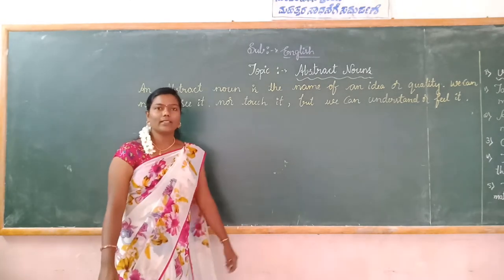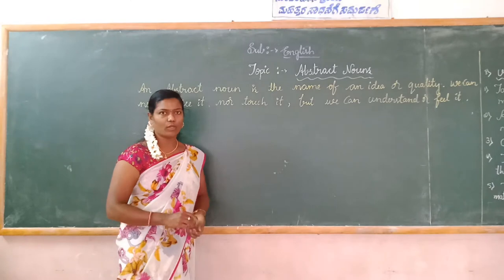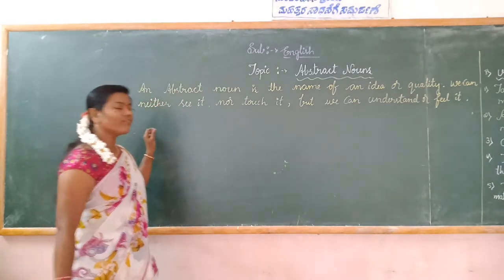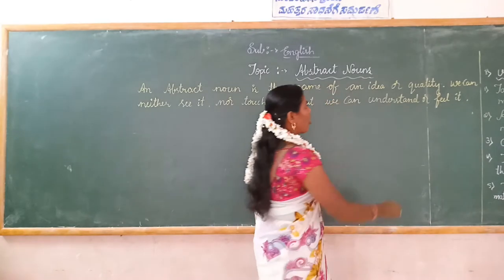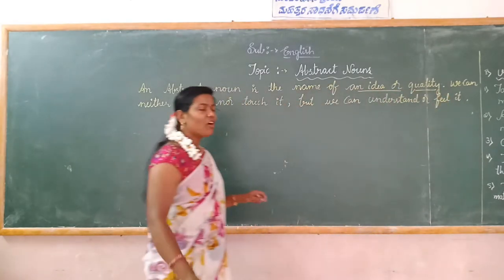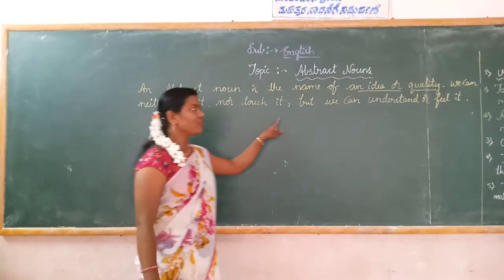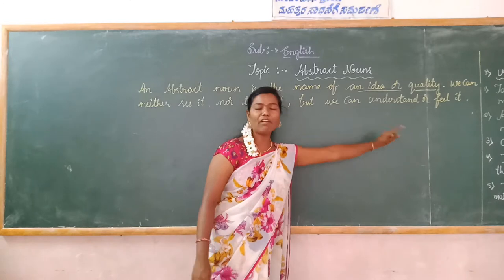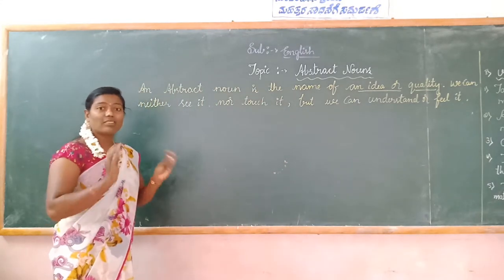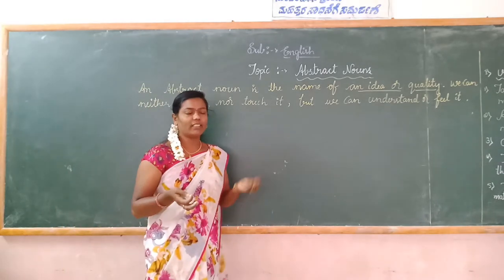Next, the type of noun: abstract noun. An abstract noun is the name of an idea or quality. We can neither see it nor touch it, but we can understand it and feel it.